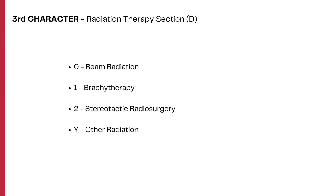The third character defines the treatment modality as a root type. Examples include brachytherapy and stereotactic radiosurgery. There are four different root types used in this section: beam radiation, brachytherapy, stereotactic radiosurgery, and other radiation.